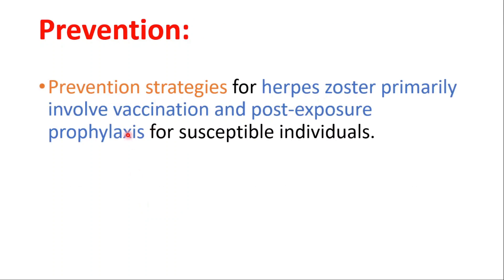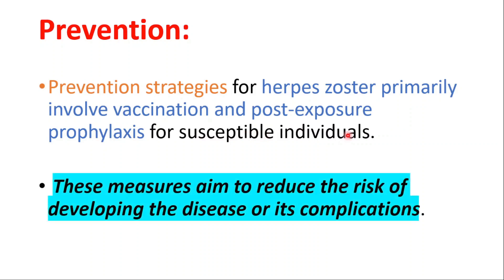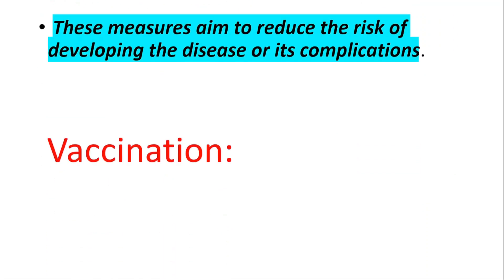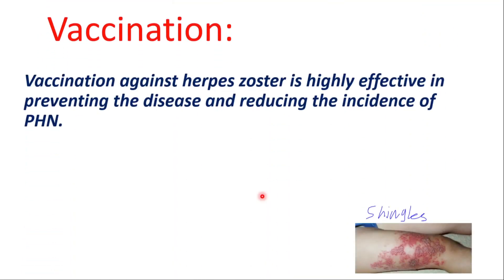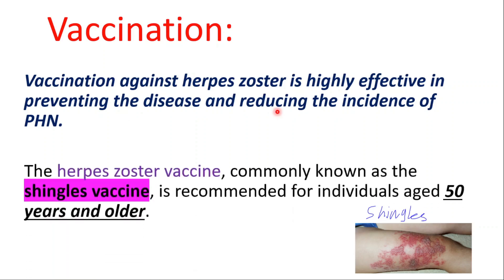For prevention, vaccination and post-exposure prophylaxis are used for susceptible individuals to reduce the risk of developing the disease or its complications. Vaccination against herpes zoster is highly effective in preventing the disease and reducing the incidence of post-herpetic neuralgia. The herpes zoster vaccine, commonly known as the shingles vaccine, is recommended for individuals aged 50 years and older.